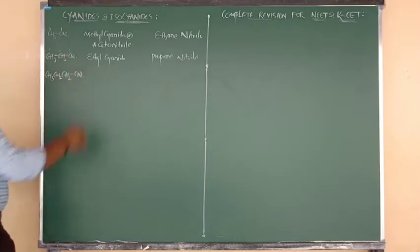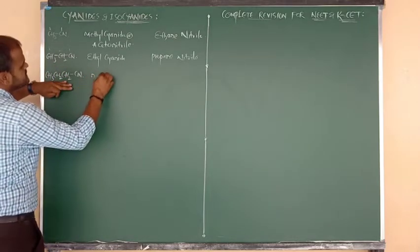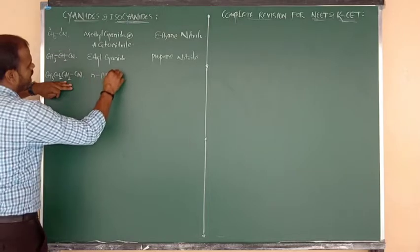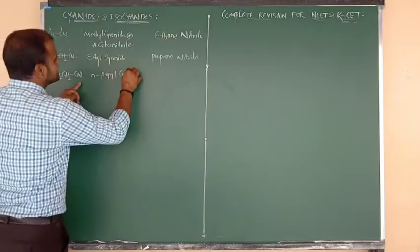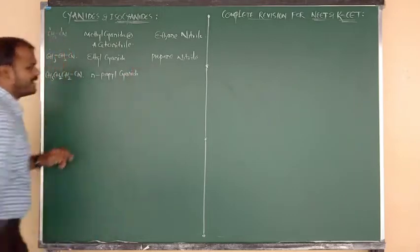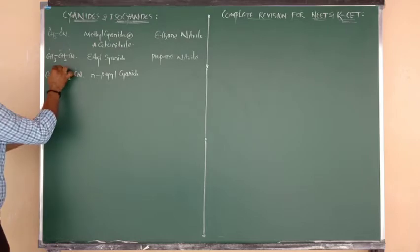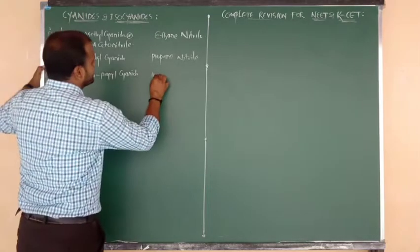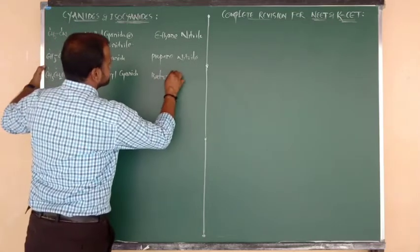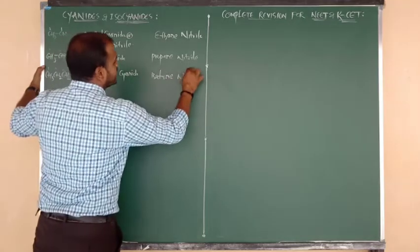Next compound: CH3CH2CH2CN — three carbon chain connected to CN. The common name is n-propyl cyanide. Counting the carbons including CN: carbon one, two, three, four — total four carbons. So the IUPAC name is butanenitrile.